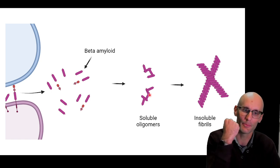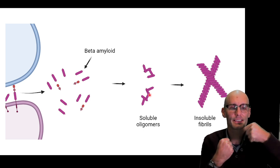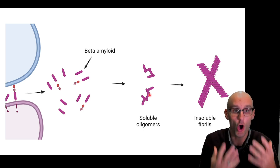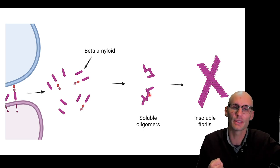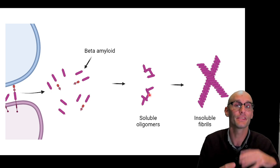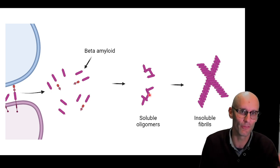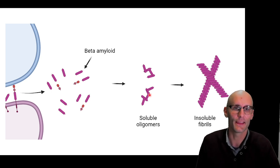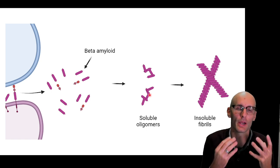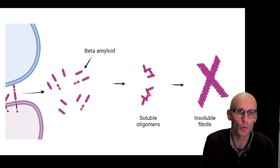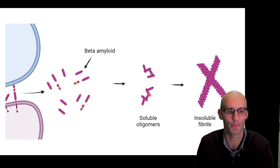Essentially this beta amyloid has a unique property of being a very sticky protein and it starts to stick to itself. First it comes as a monomer — which means a single amyloid — then it sticks together to form an oligomer, which means many amyloids stuck together, and then those oligomers stick together to become insoluble fibrils. Now these fibrils become the amyloid plaques — one of the most notable histological features of an Alzheimer's brain.